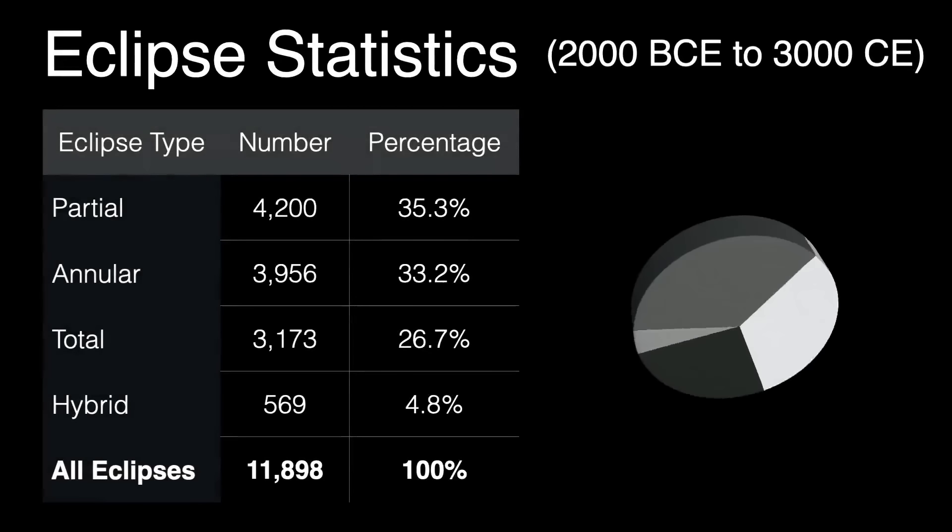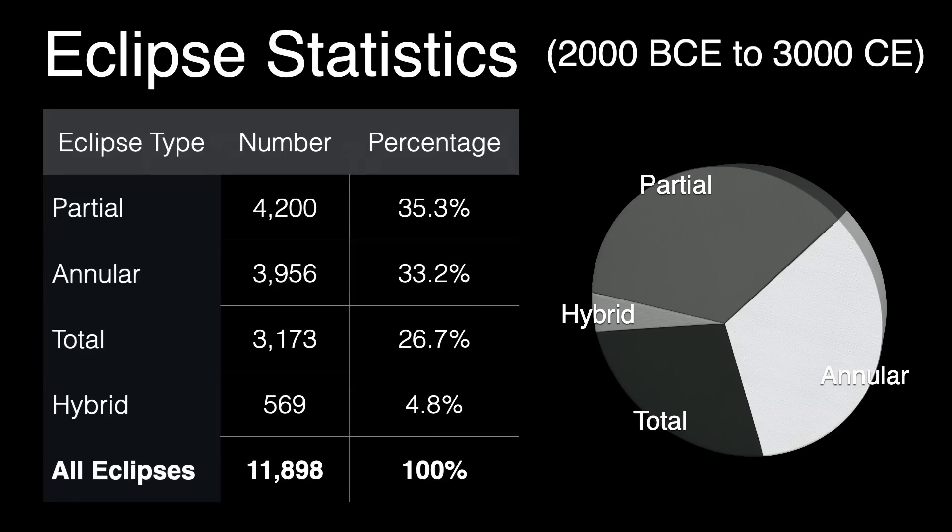What portion of eclipses are annular or total? It might be interesting to take a quick look at that. We'll use 5,000 years of eclipses from 2,000 BCE to 3,000 CE. About one-third of all eclipses are partial, another third are annular, and slightly over one-quarter are total.